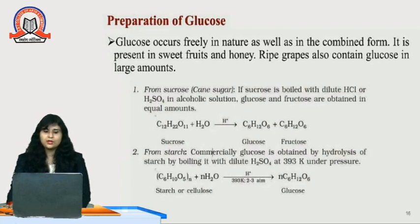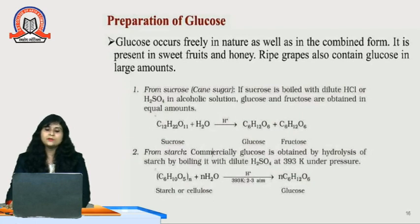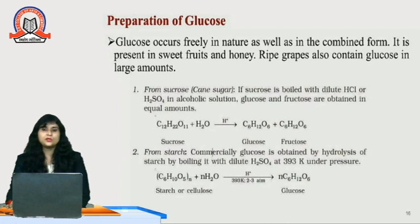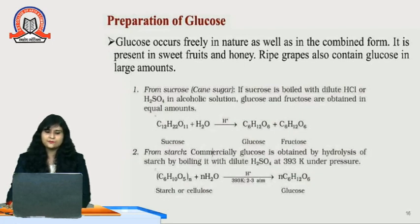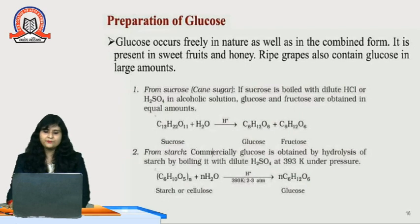The second preparation is from starch. Commercially, glucose is obtained by hydrolysis of starch by boiling it with dilute H2SO4 at 393 Kelvin under pressure. When we hydrolyse starch with dilute H2SO4, we get several units of glucose. Starch has n number of monosaccharide units — starch is an example of polysaccharides, represented as (C6H10O5)n. On hydrolysis with water at 393 Kelvin under pressure, it yields glucose.